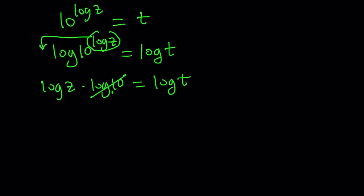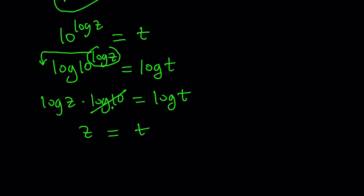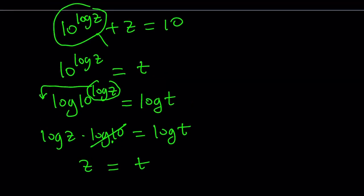And I end up with log z equals log t, meaning that z is the same as t. I call this t, so it is z. In other words, I get the following equation from here: z plus z equals 10. So z equals 5. Because 2z equals 10.